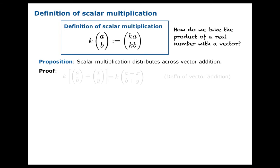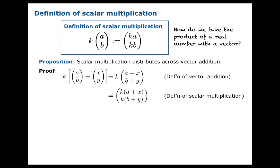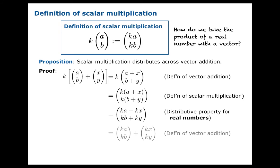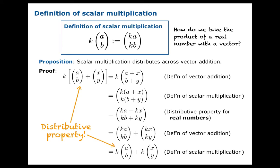Let's carefully employ our definitions. First, inside the square brackets, we will add those vectors. Then we'll use our definition of scalar multiplication. Now we've arrived at components where it's just good old-fashioned real numbers at work, so we can distribute there. Then we carefully unravel this using our definition of vector addition and our definition of scalar multiplication. And that's exactly what we wanted to prove — that's our distributive property.